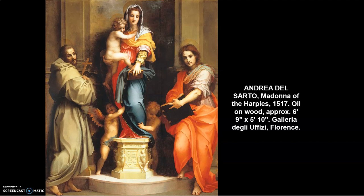Andrea del Sarto's image here is loaded with a number of things that point to a different set of priorities. In particular, the poses of the two flanking saints — Francis on the left and John the Evangelist on the right — but also the somewhat precarious and unlikely posture of the Virgin Mary as she stands in a very precarious position up on this pedestal.